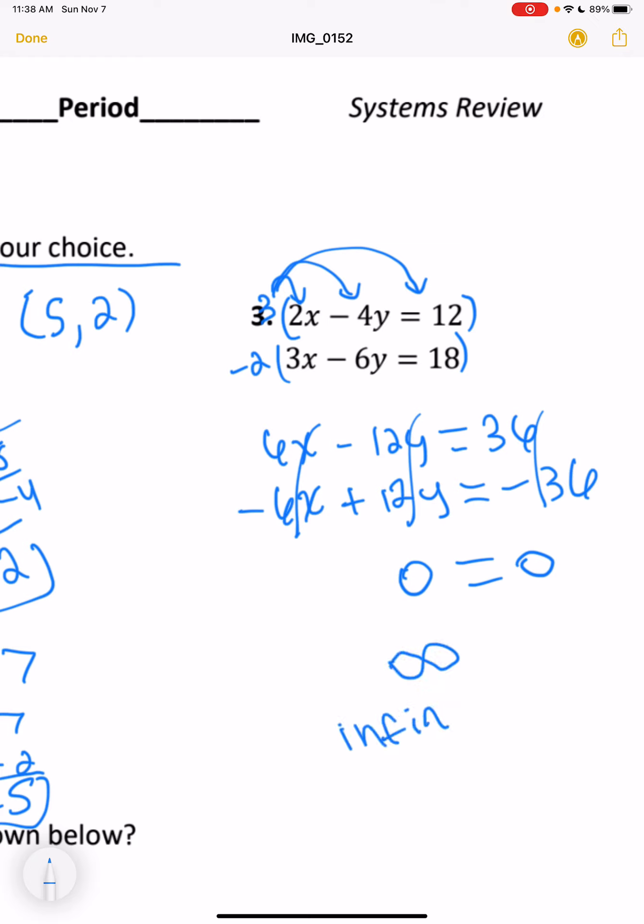So this one would be infinitely many solutions. I'm going to write that both ways. If it were to cancel out both of the variables and we would be left with like 0 equals 15 on this side over here, that's when we would have no solution. But that did not happen in this case. Since both sides were equal, everything canceled out. We did end up with infinitely many solutions.